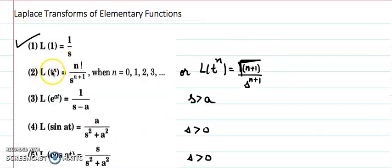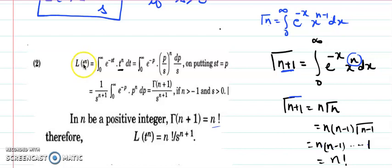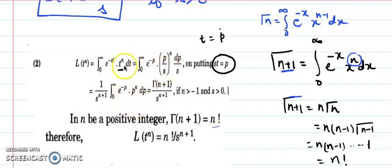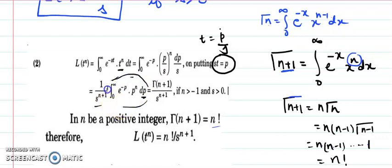Now the Laplace transformation of t to the power n is n factorial over s to the power n+1, or equivalently using the gamma function. As per the definition, the function is t to the power n, so we multiply e to the power minus st by t to the power n. After substitution — setting t equals p over s, dt equals dp over s — all the s terms come out as common, since the integration is now with respect to p.